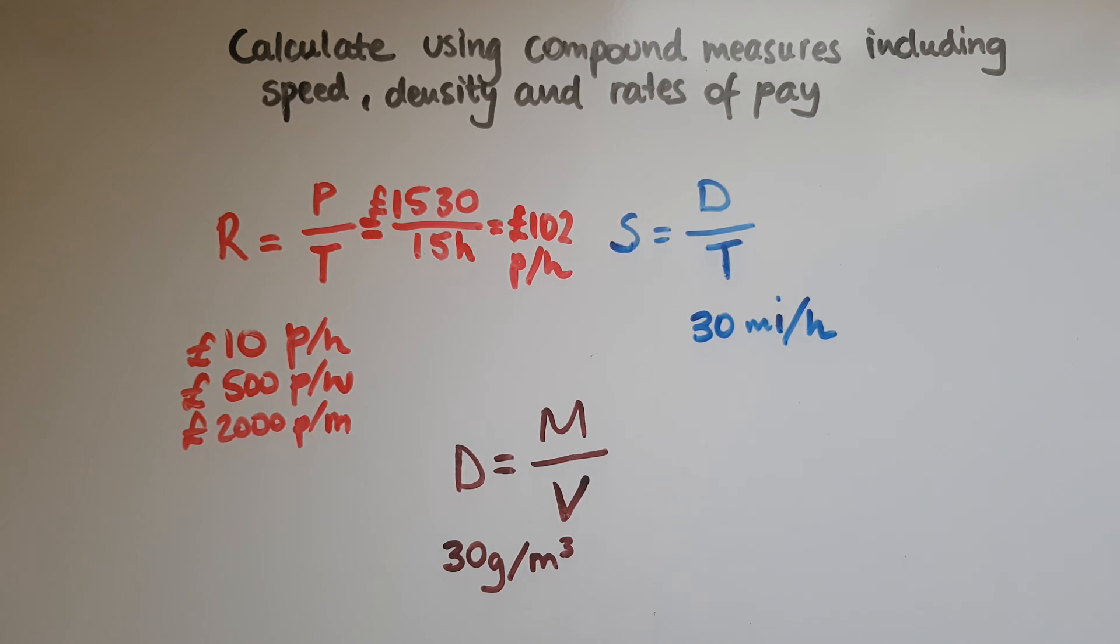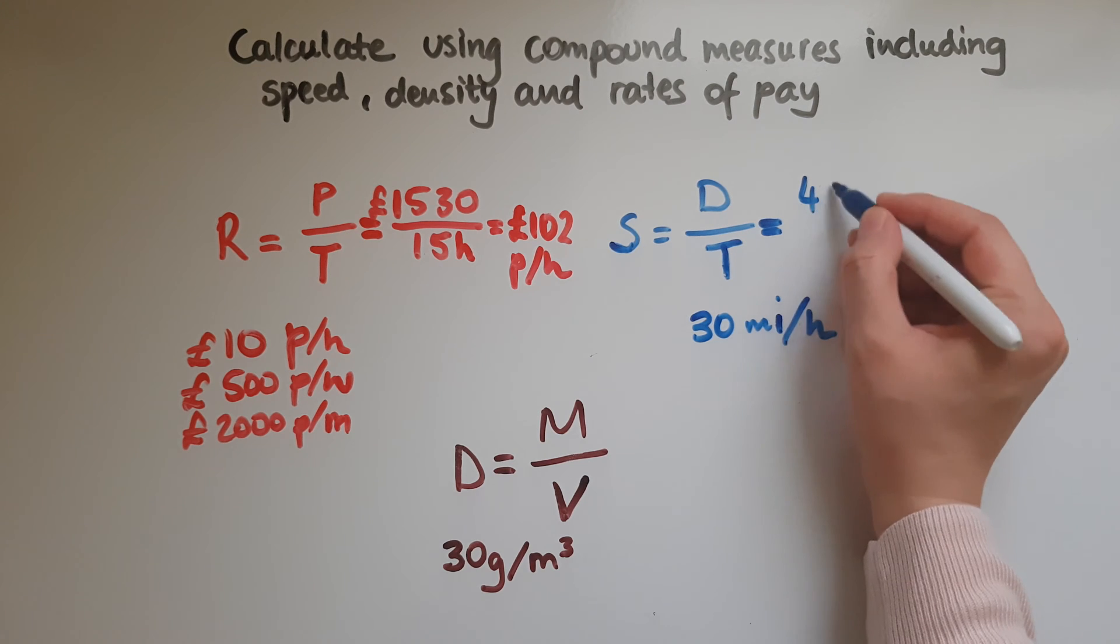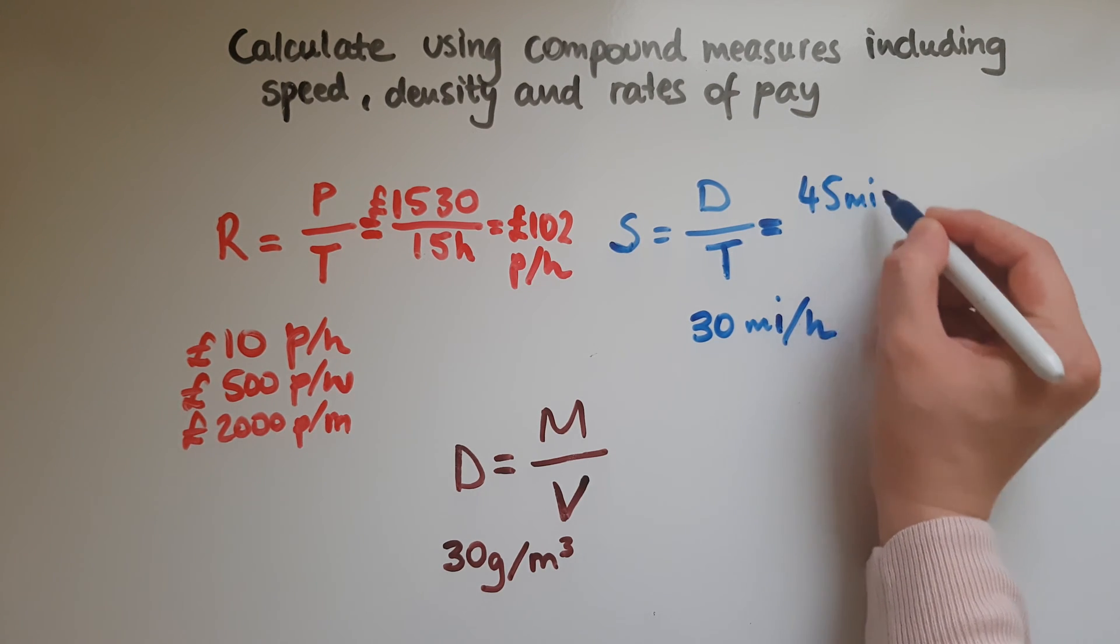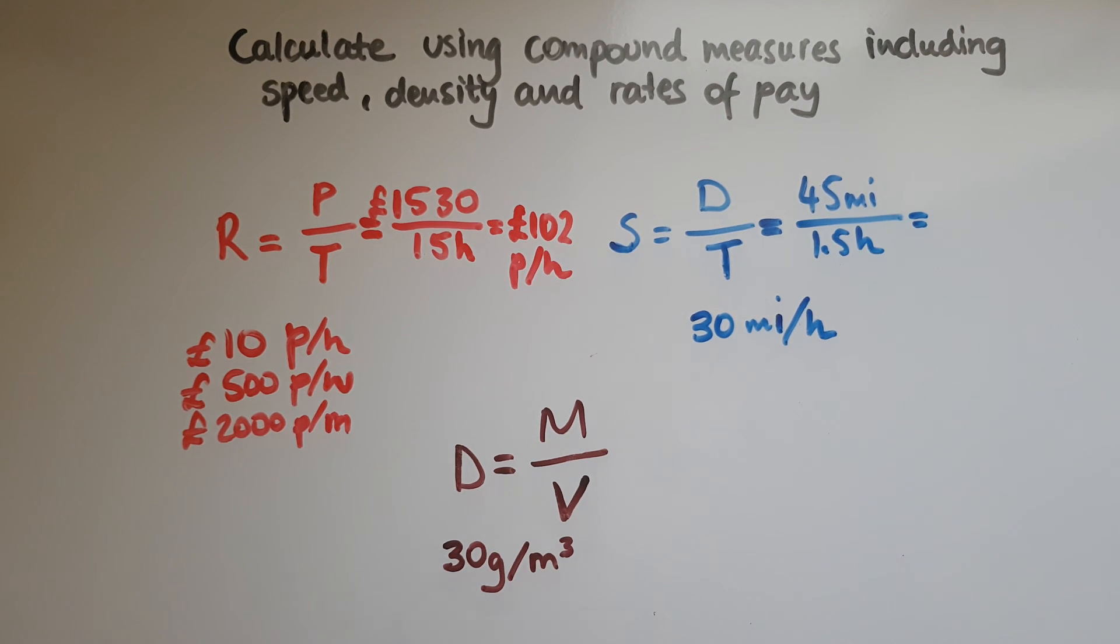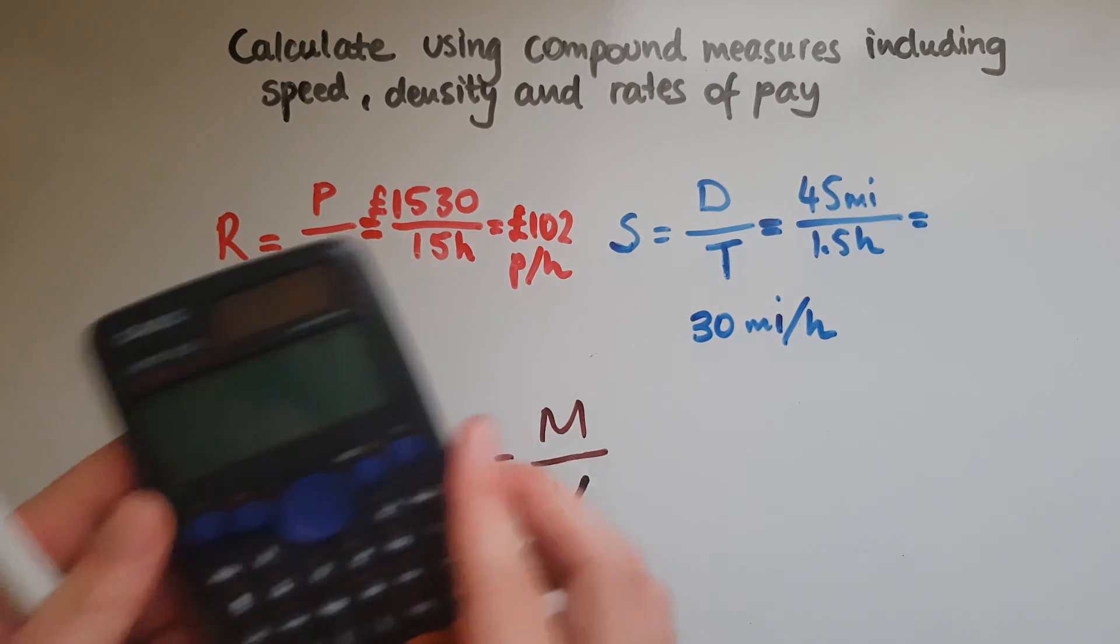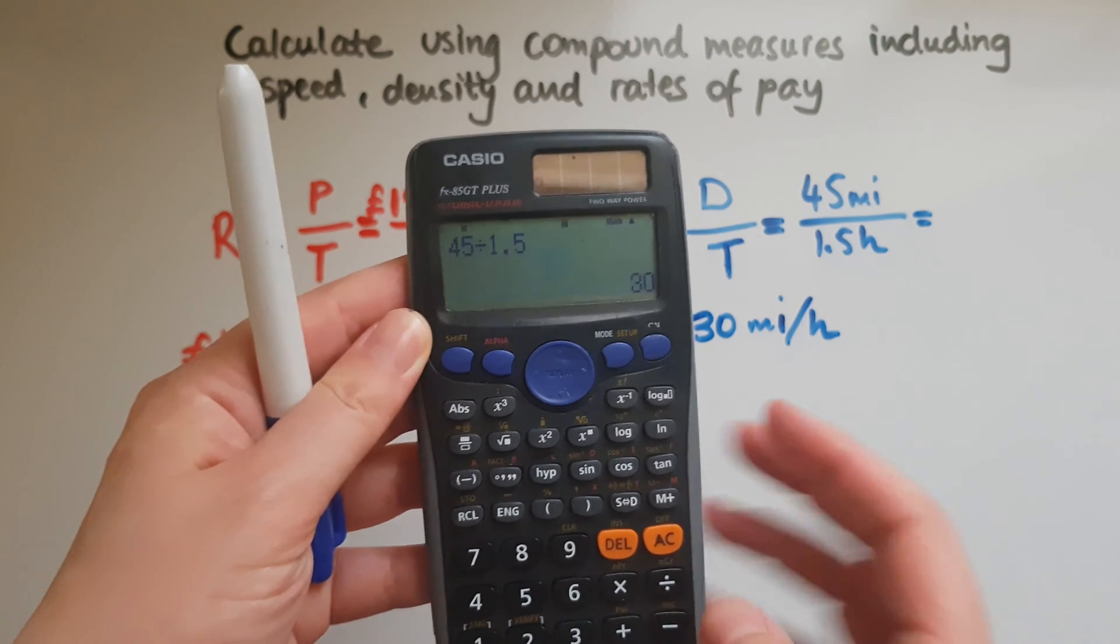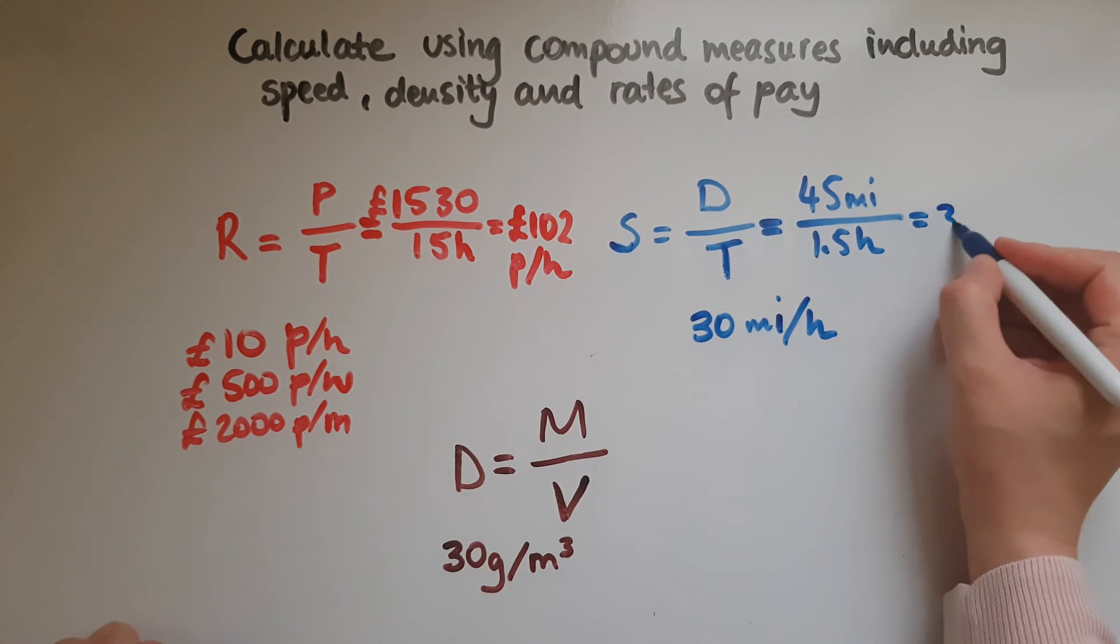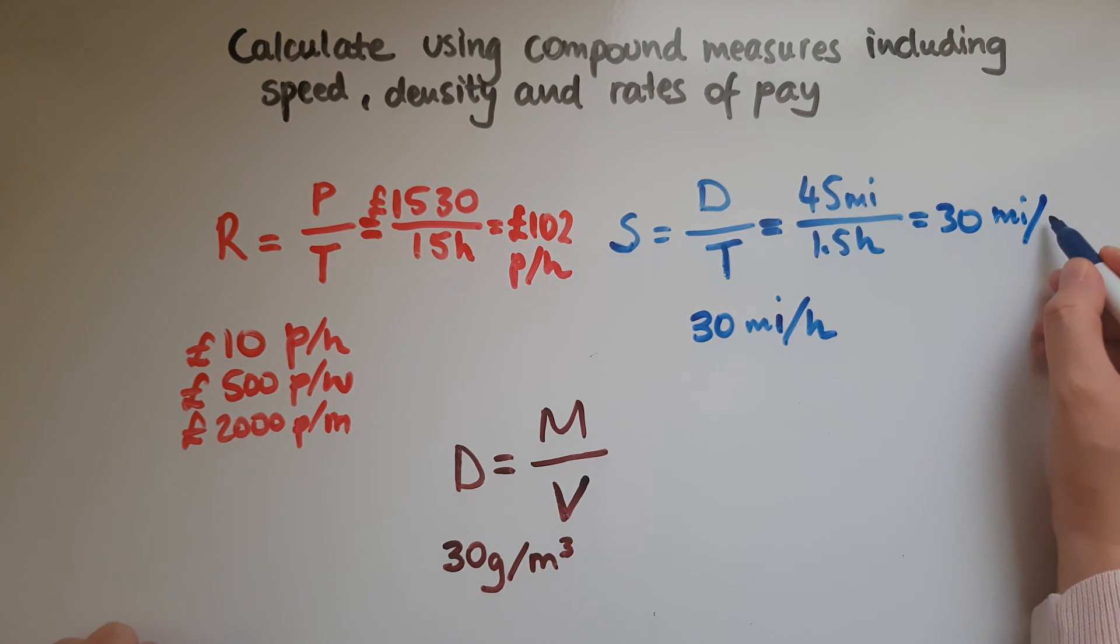So to illustrate with an example, we might have a car travelling 45 miles for maybe 1.5 hours. So that's what we do, 45 divided by 1.5 gives us 30. So what is that 30? 30 is miles per hour. So whatever we input, that's what we get out.